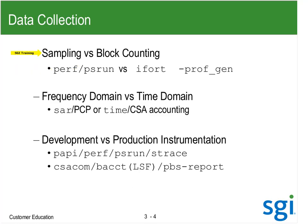Both PERF and psrun are sampling types of events. The other type, block counting, is that profile-guided optimization where I generate a binary that is profile-ready. A lot of the other data I look at is in the frequency domain. SAR and PCP are simply saying how many times per second is something happening, whereas what I really want is to get into the time domain and elapsed time components.